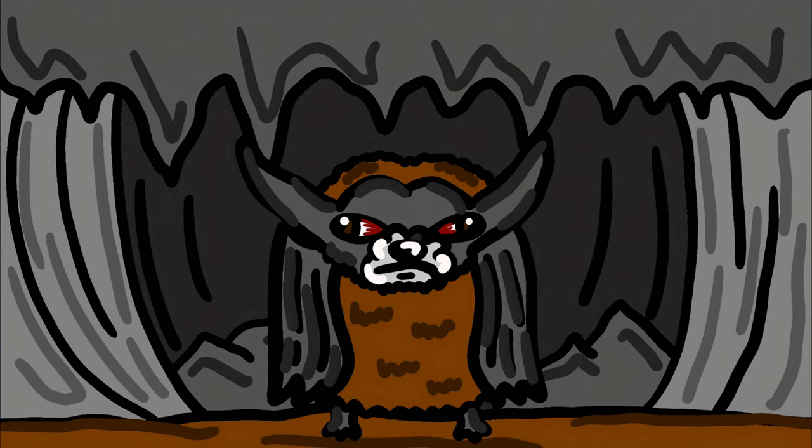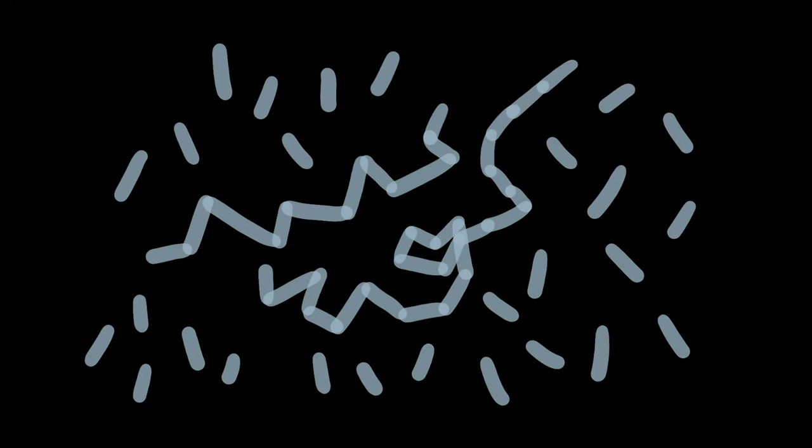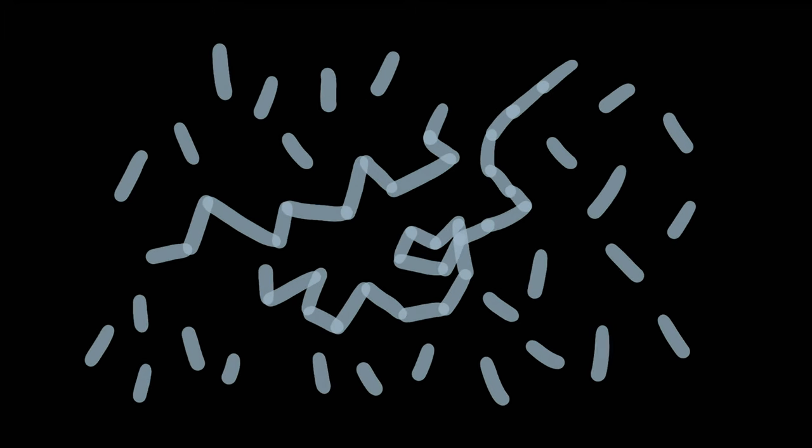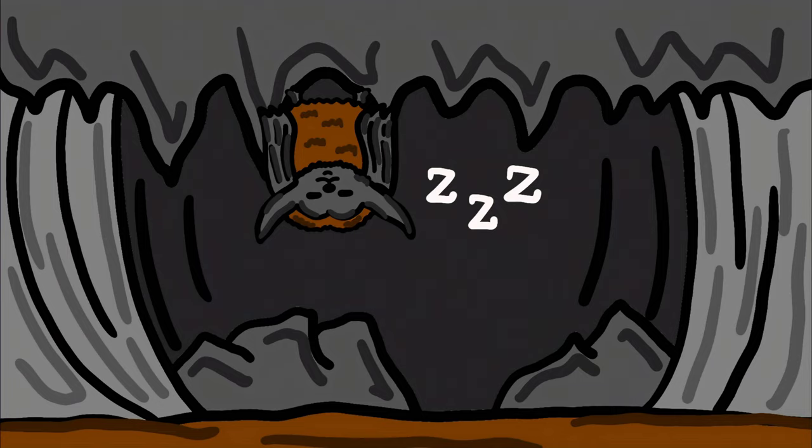Number 6. White Nose Syndrome. Primarily affecting bats, this disease is caused by the fungus Pseudogymnoascus destructans, which thrives in cold, damp environments of caves where bats hibernate.